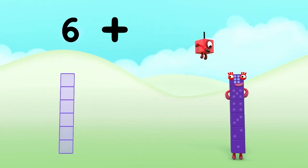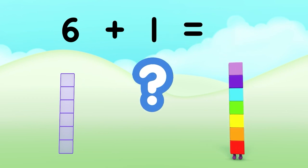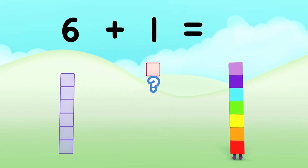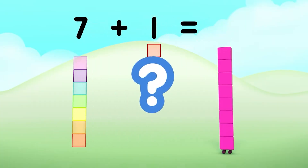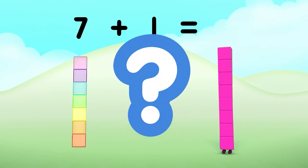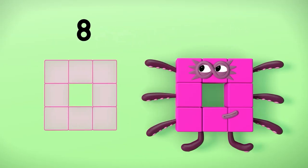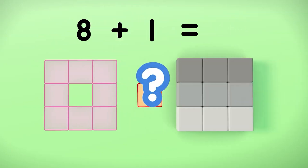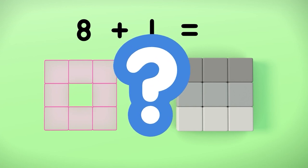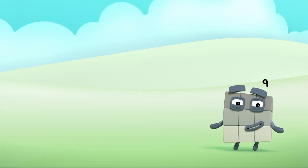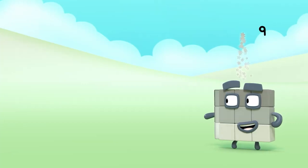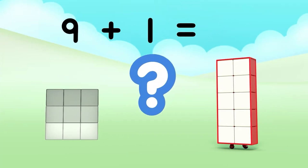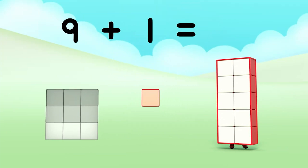Six plus one equals seven. Seven plus one equals eight. Eight plus one equals nine. Nine minus one equals eight. Nine plus one equals ten.